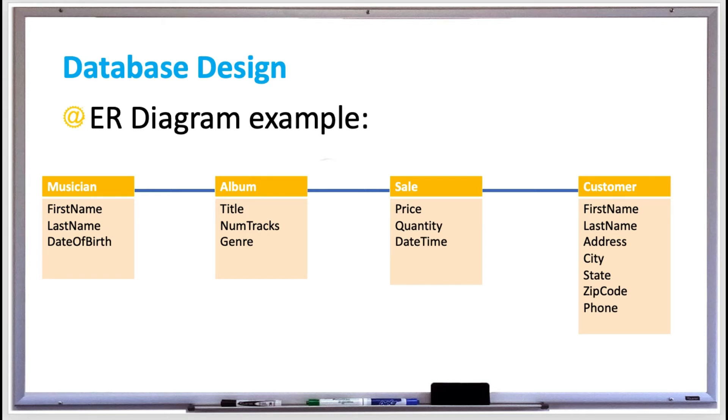Attributes are described using text inside the rectangles. For example, a musician such as Kanye West would be first name Kanye, last name West. It would store his date of birth. You'd make an album like the college dropout. It'll list the number of tracks, and the genre would be hip-hop.